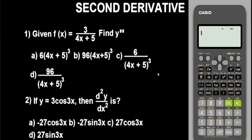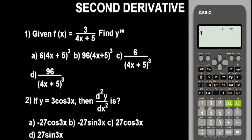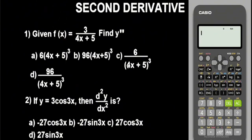The very first thing you have to do is reset the calculator. Press shift button 9 for the reset instruction, press 3, press equals, and press equals again — it's now reset. Next, ensure the calculator is in radian mode. Whenever you're solving derivatives or differentiation, always put the calculator in radian mode. By default it's in degree mode, so press shift then mode; radian is option 4, press 4. It's now in radian mode.